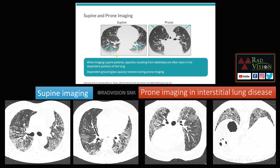A common finding we encounter in practice is opacities in the posterior basal lungs — these are gravitational opacities or atelectasis in the dependent parts of the lungs. Whenever you see these, perform prone imaging. If all opacities seen in supine completely resolve in prone, they are confirmed as gravitational opacities or positional atelectasis.